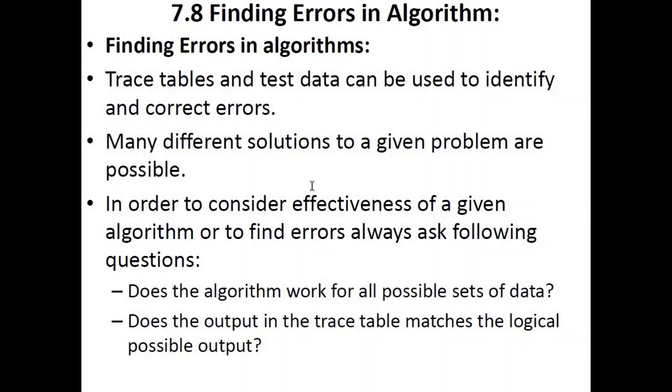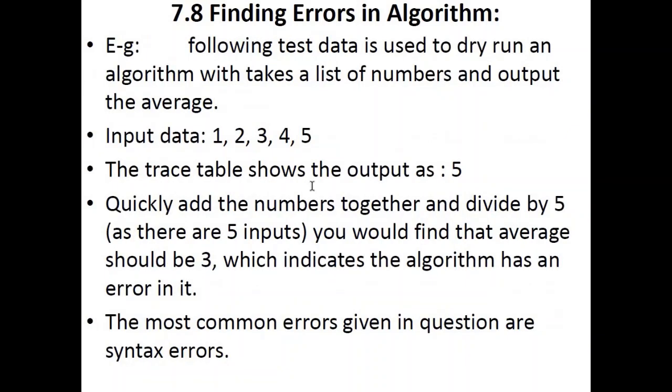Secondly, does the output in the trace table match the logical possible output? For example, following test data is used to dry run an algorithm which takes a list of numbers and outputs the average. The input data is 1, 2, 3, 4, 5. Now the trace table shows the output as 5. So how would you know if this is correct or not? Quickly add all these numbers together: 1 plus 2 is 3, 3 plus 3 is 6, 6 plus 4 is 10, and 10 plus 5 is 15. 15 divided by 5 should give you 3 as the mean or an average. But you're getting output as 5, that means there's a logical problem with your written algorithm or flowchart. So by using trace tables and the output column, you can easily identify whether your given algorithm has any errors or not.